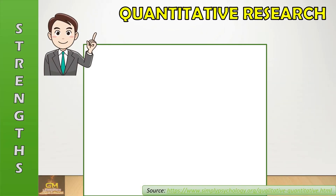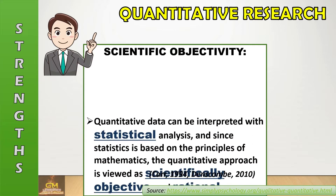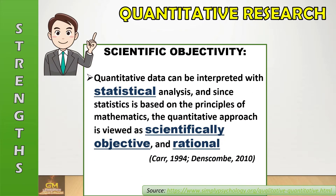To start our discussion, one of the strengths of quantitative research is scientific objectivity. Scientific objectivity means that quantitative data can be interpreted with statistical analysis. And since statistics is based on the principles of mathematics, the quantitative approach is viewed as scientifically objective and rational.